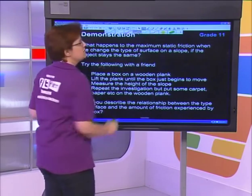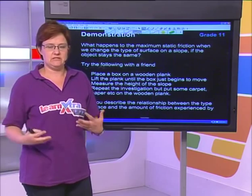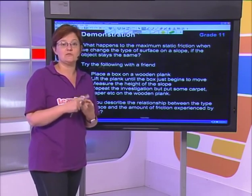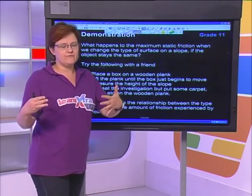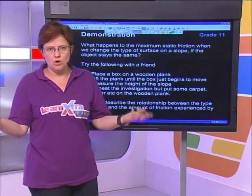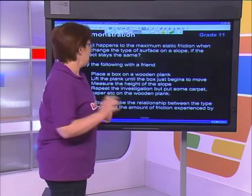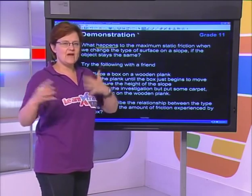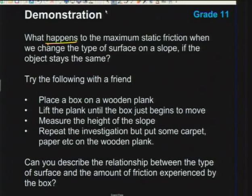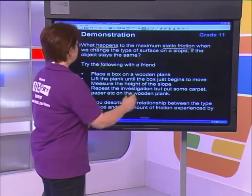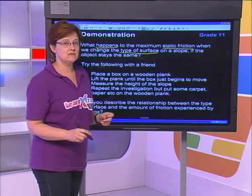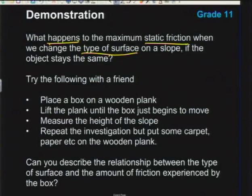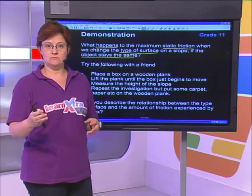This is really important because in your exams you'll often be asked to write an investigative question. First rule: it mustn't be a question you can answer with yes or no. So I couldn't ask 'does the type of surface affect friction?' — that's a yes/no answer. But 'what happens' implies we're looking for a relationship. So: what happens to the maximum static friction — that's my dependent variable — when we change the type of surface — that's my independent variable — when the object stays the same — that's my control variable.